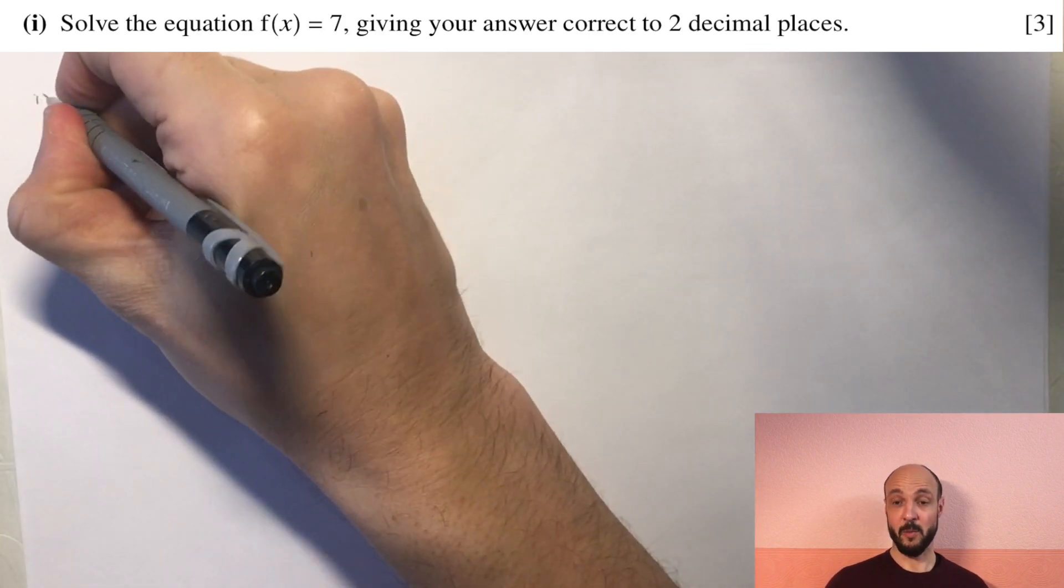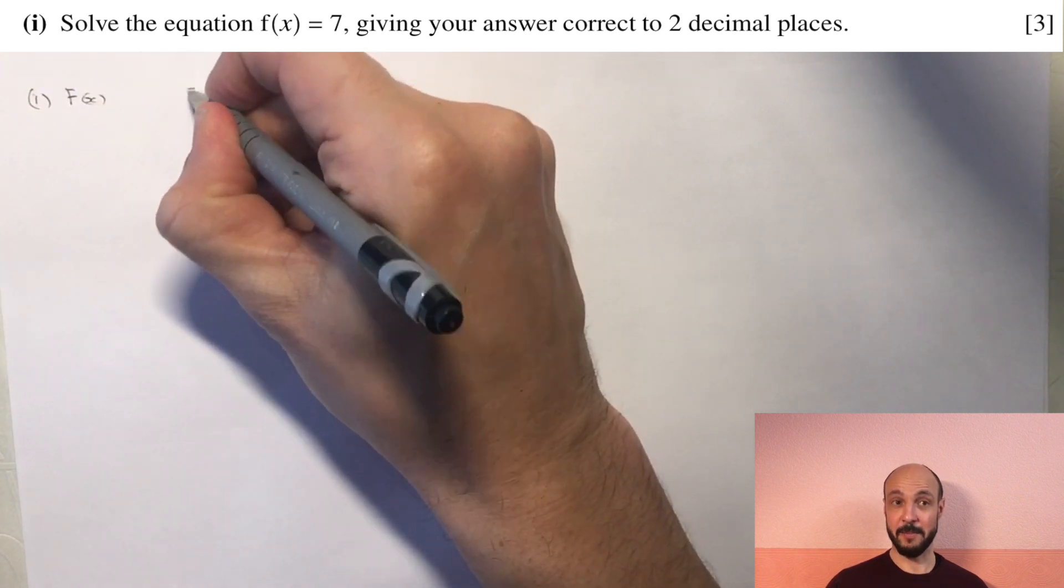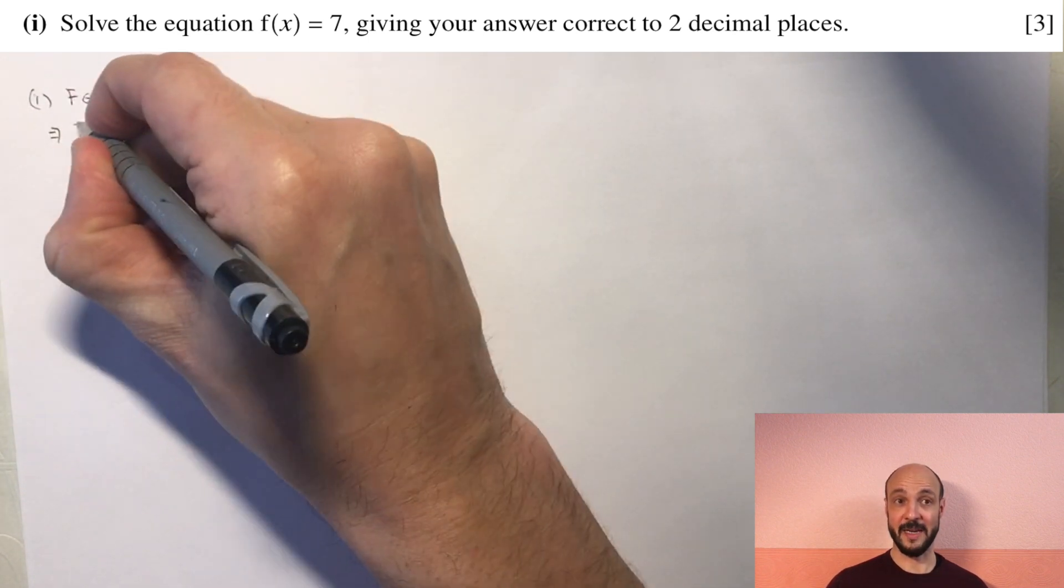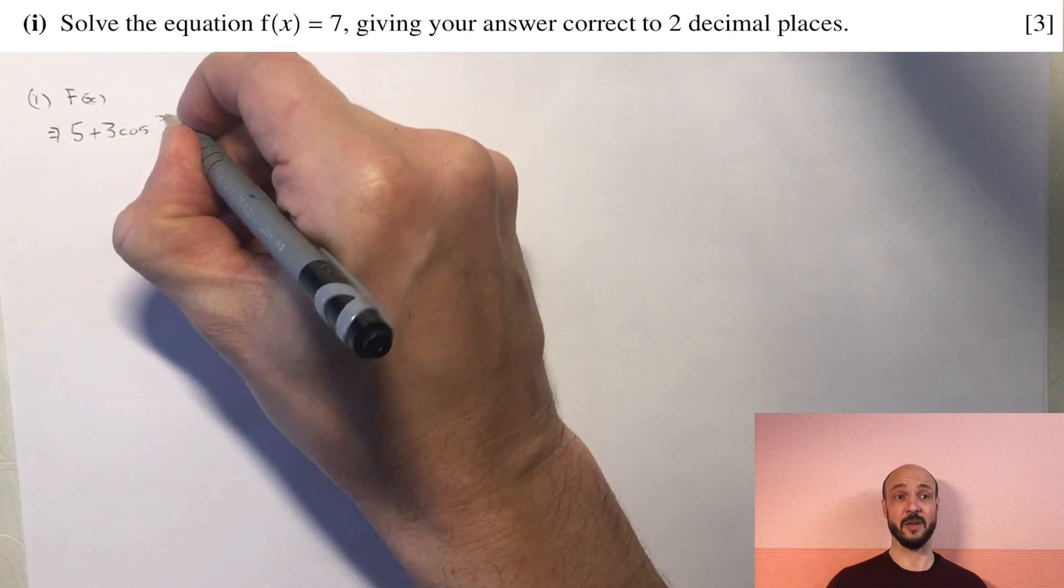So the first part, we want to solve the equation f(x) equals 7. We simply put our function 5 plus 3 cos of x over 2 equal to 7, and then we simply have to solve this equation.